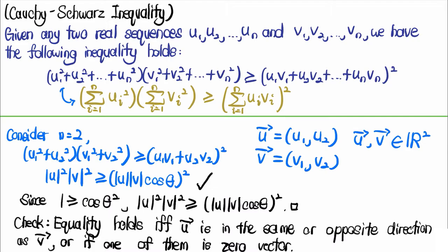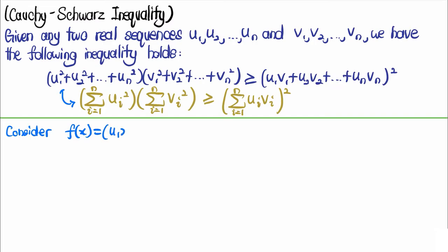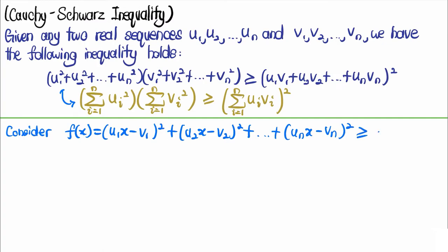Now we look at the general case with n terms. To prove it elementarily, consider the function f(x) = (u₁x − v₁)² + (u₂x − v₂)² + ... + (uₙx − vₙ)². We can immediately notice that f(x) ≥ 0, since it is a sum of squared terms where each term is greater than or equal to zero.